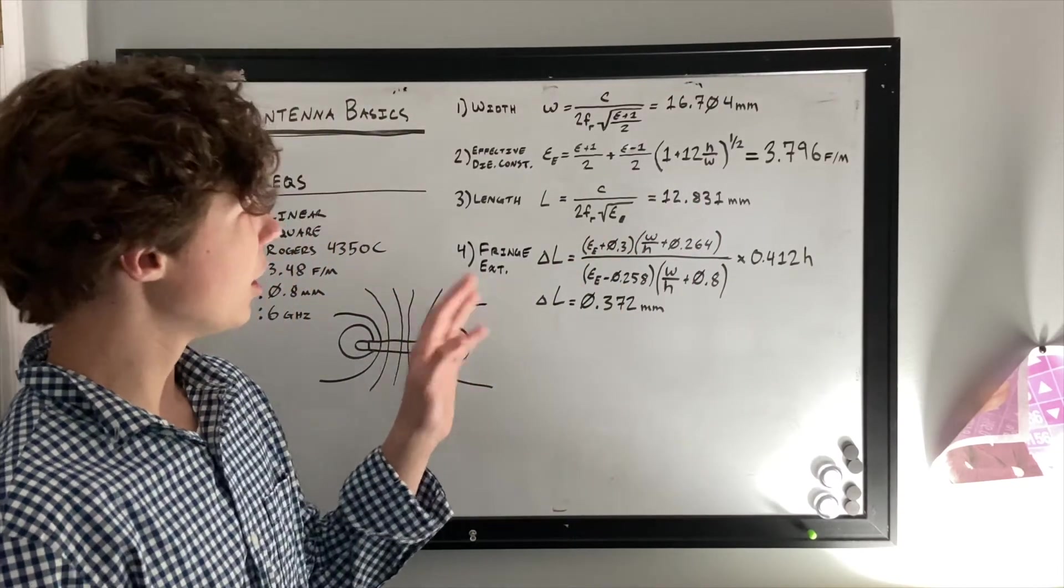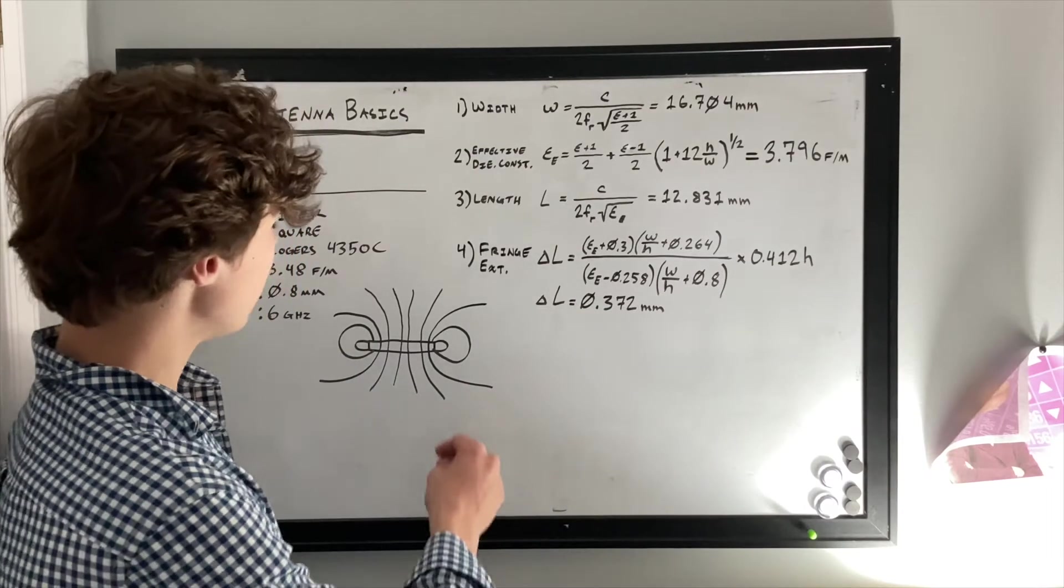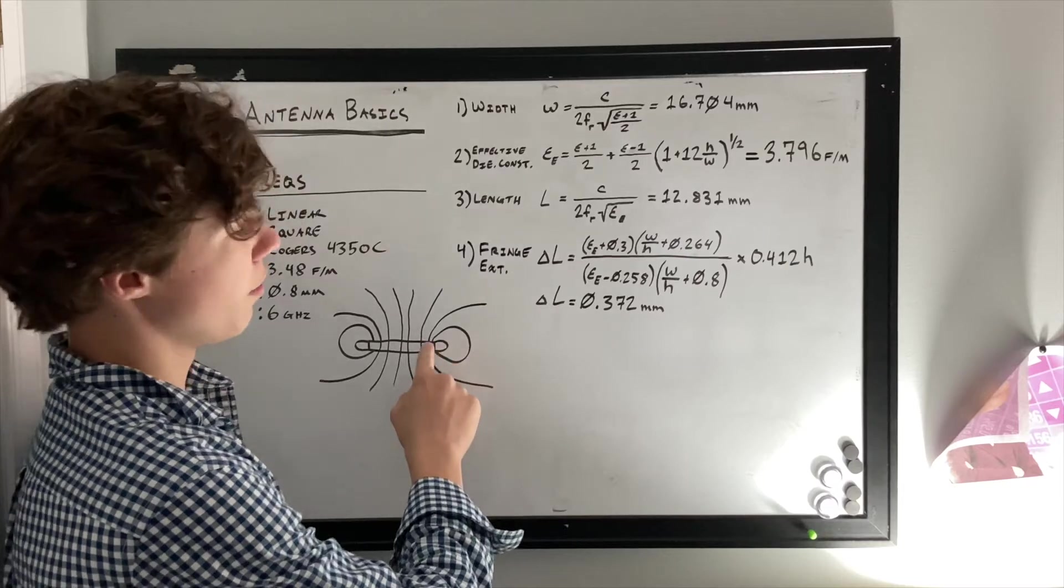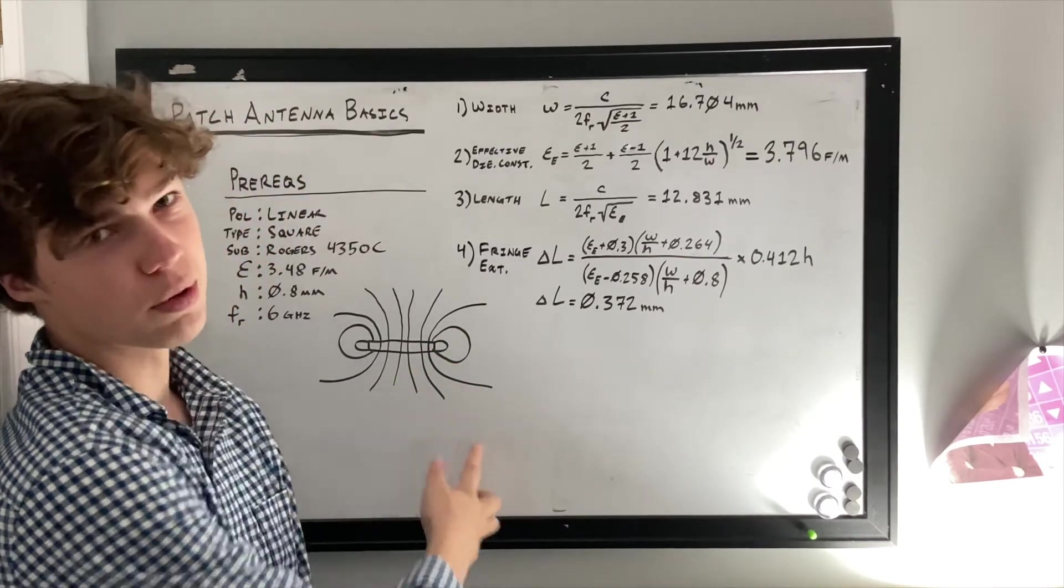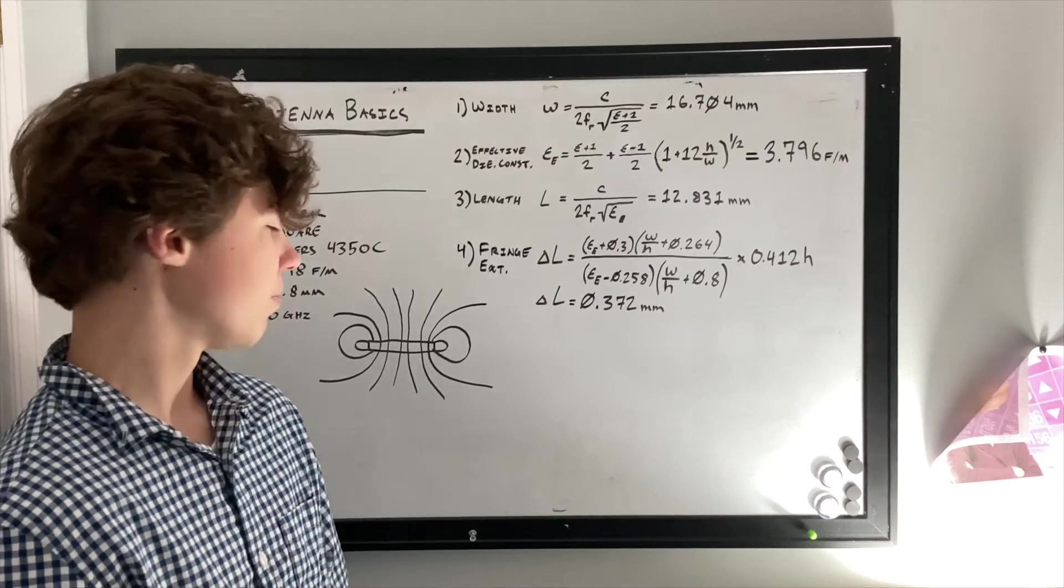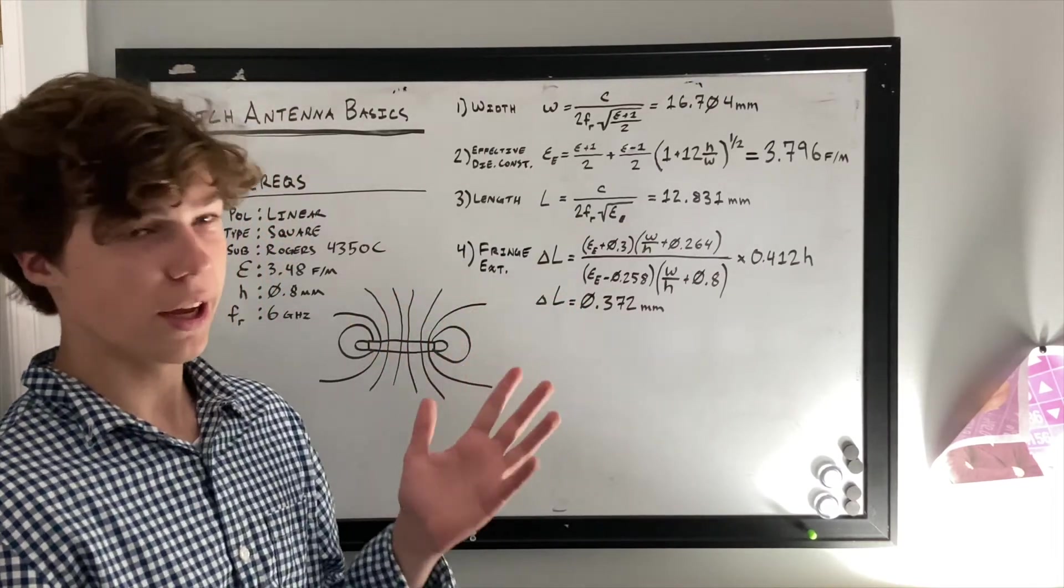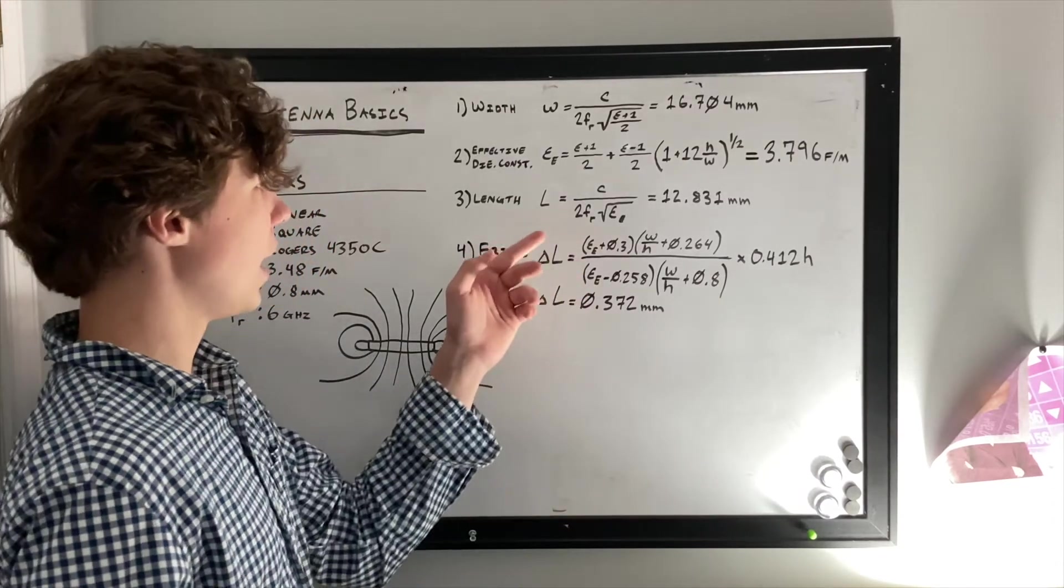Now we need to calculate for this thing called the fringing effect. Basically, it's the curling of the electric flux lines near the edge of the patch, which caused it to be extended. And it kind of looks somewhat like this, but my diagramming is, of course, terrible. So in that case, we call this delta L. And up next, I'll give you the equation for combining these two.